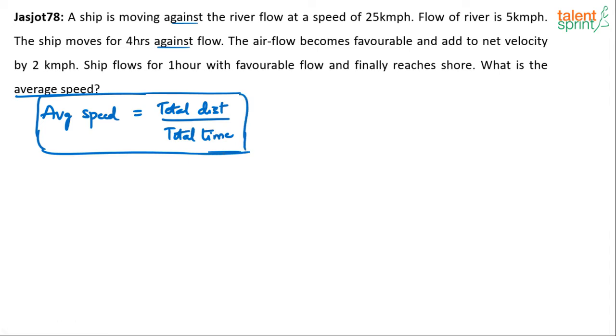I think total time is very simple. It travels for 4 hours against the flow, 1 hour with the flow. So total time is 4 plus 1, 5 hours. See the ship is moving against the river flow at a speed of 25. The flow of the river is 5. So what is the upstream speed? 25 minus 5 which is 20 km per hour. This is upstream speed.